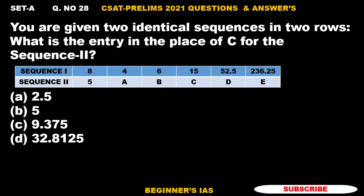Hello aspirants, let us discuss question number 28. You are given two identical sequences in two rows. Sequence 1 follows: 8, 4, 6, 15, 52.5, 236.25. Sequence 2: 5, A, B, C, D, E. What is the entry in the place of C for Sequence 2? To identify the sequence, we need to identify which pattern it follows.